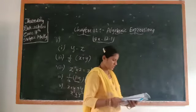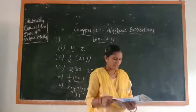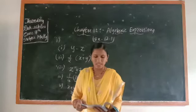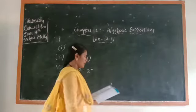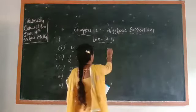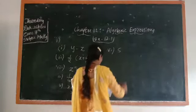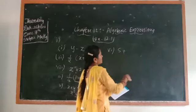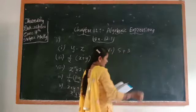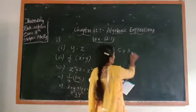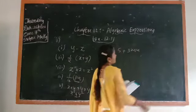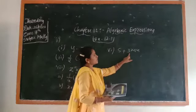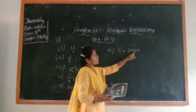The sixth question: the number five added to three times the product of numbers m and l. Five is added, so you write plus. Three times the product of m and l is 3ml. The expression is 5 + 3ml.